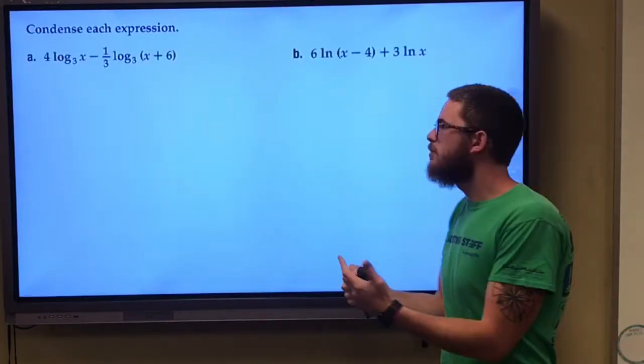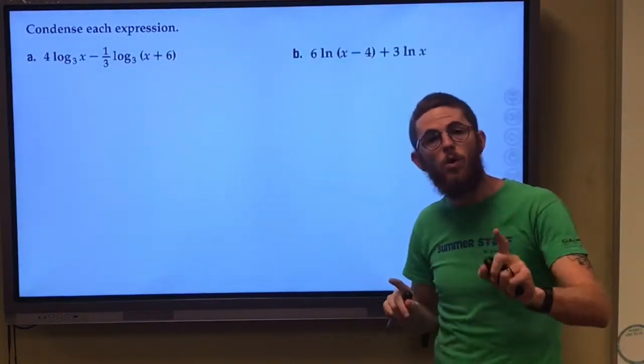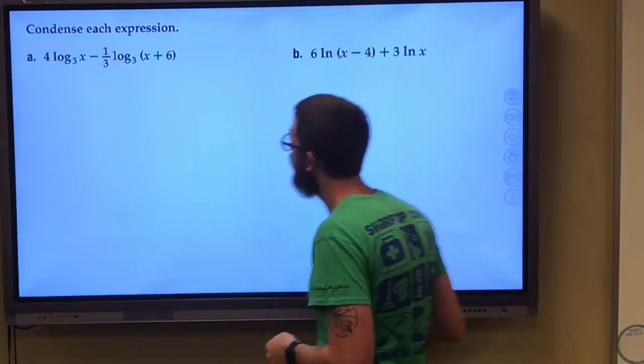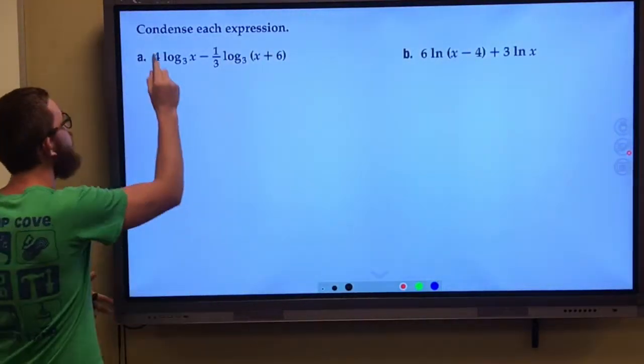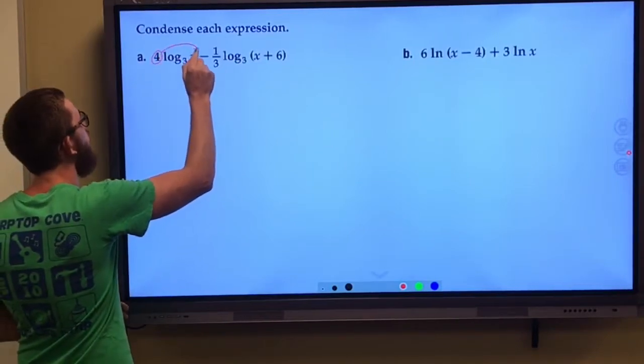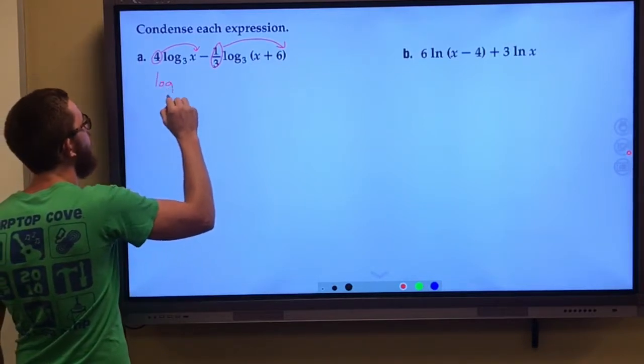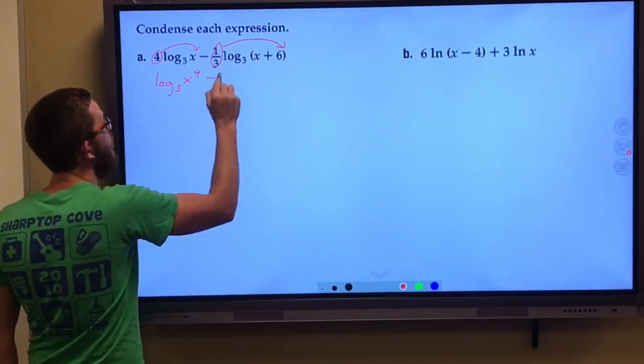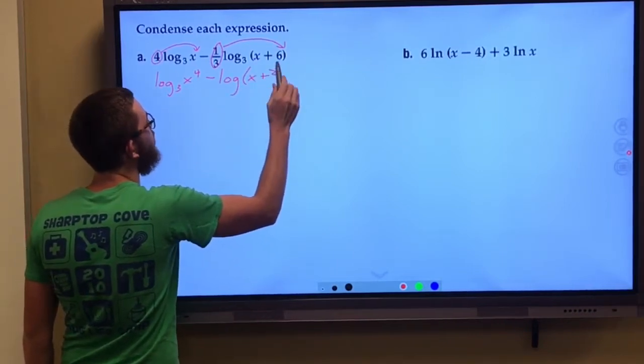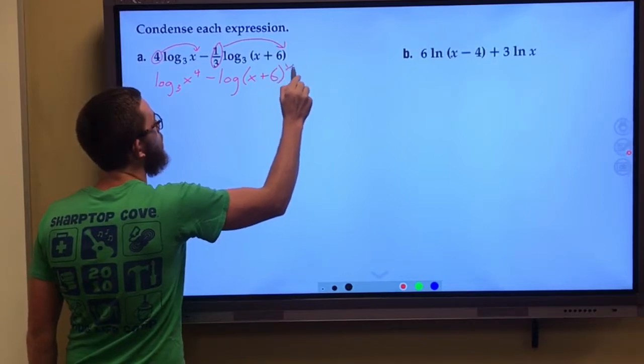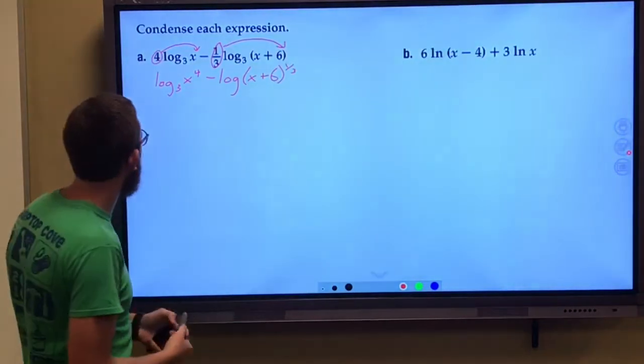Let's look at condensing some logarithms. So these are basically in expanded form. We want to write them as one logarithm. So the first thing we want to do if we want to condense some logs is we want to undo the power properties that have happened. So I'm going to rewrite this as log base 3 of x to the 4th power minus log base 3 of x plus 6 raised to the 1/3 power. So the first thing is we need to undo that power property there.